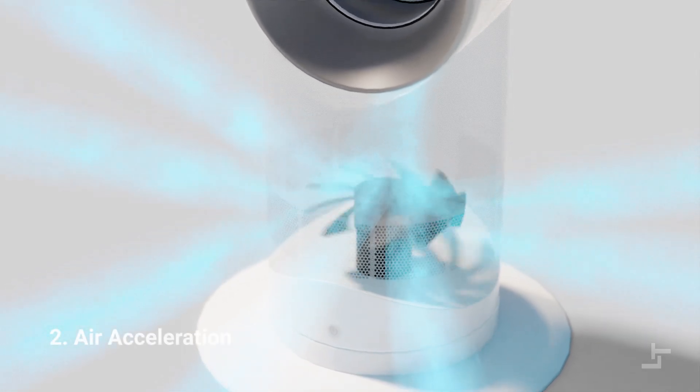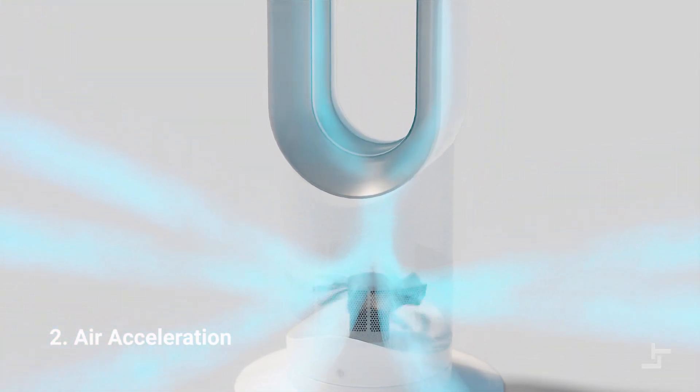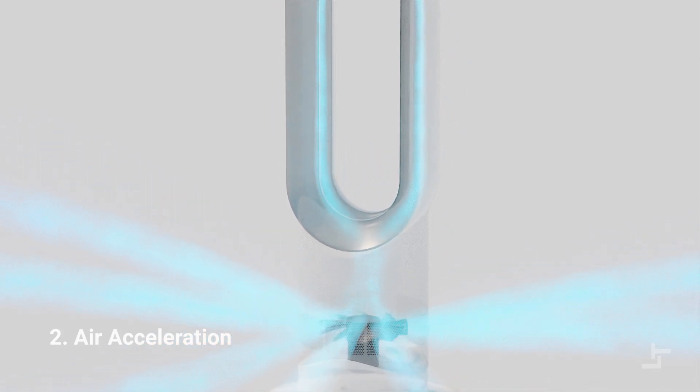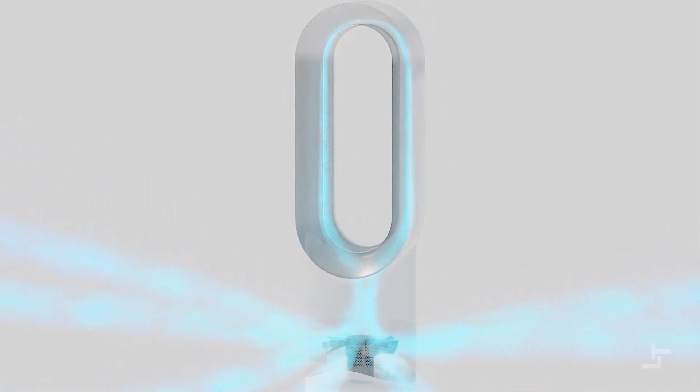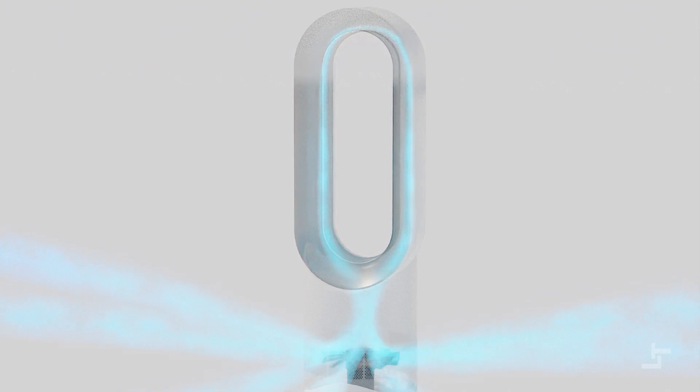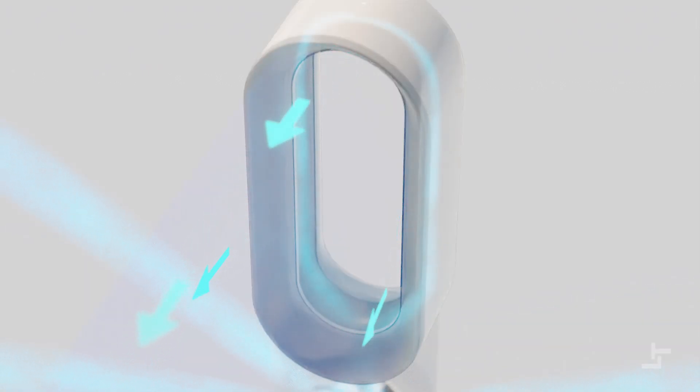Air acceleration: Once inside the unit, the air is forced up into the loop amplifier and is accelerated out through an annular aperture. This slot spans the entire length of the ring, creating a circle of flowing air. The jet of air then continues to flow over an airfoil-shaped ramp.